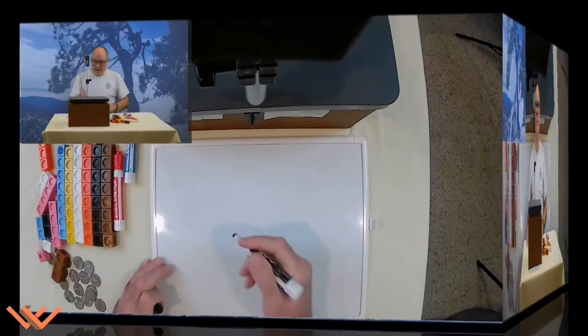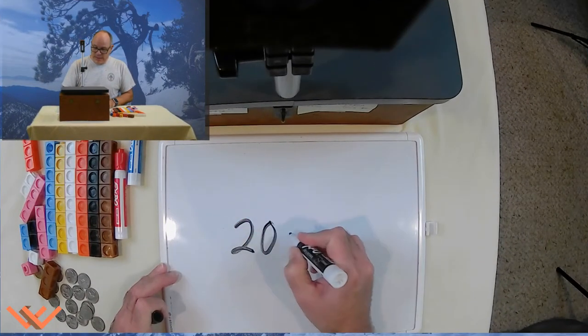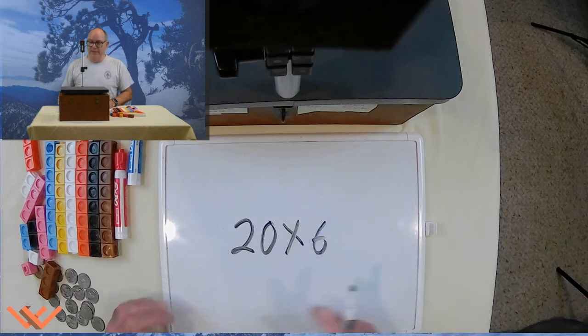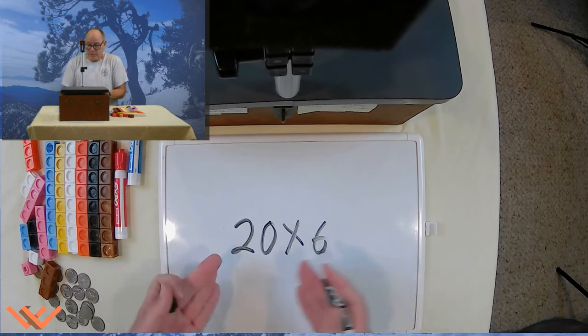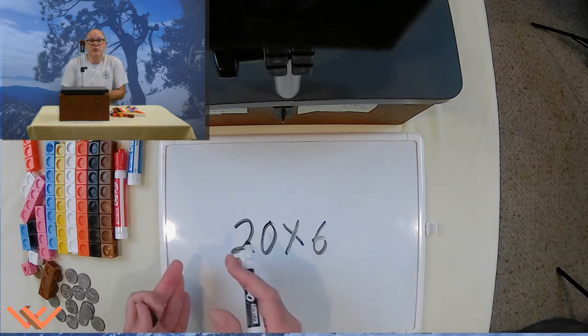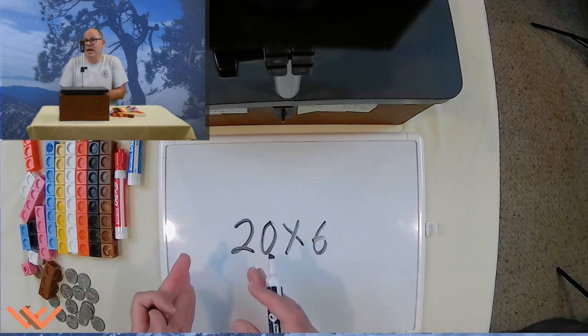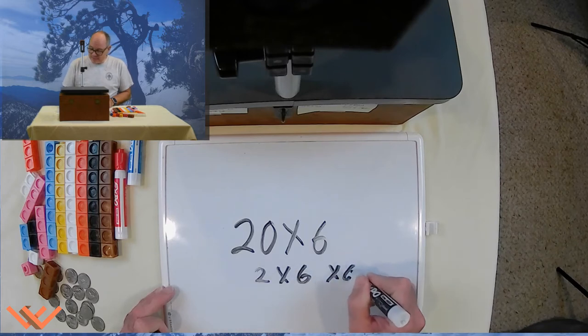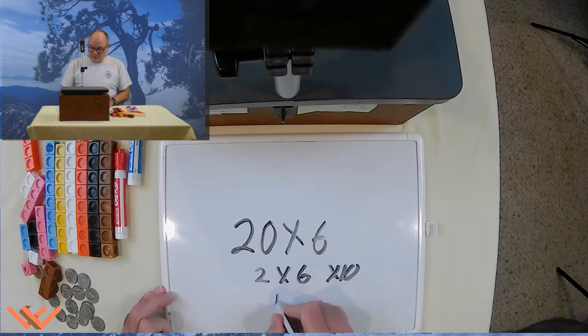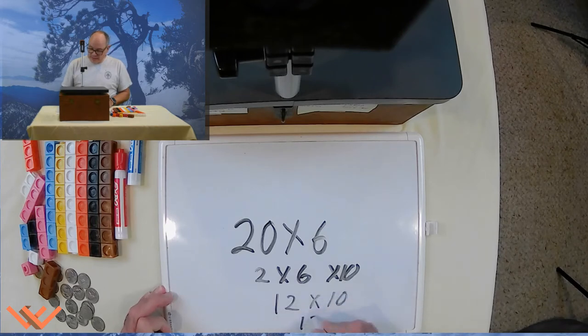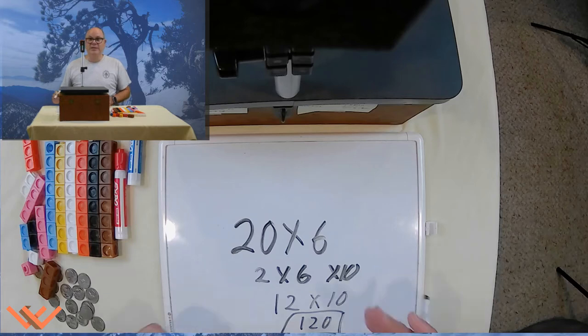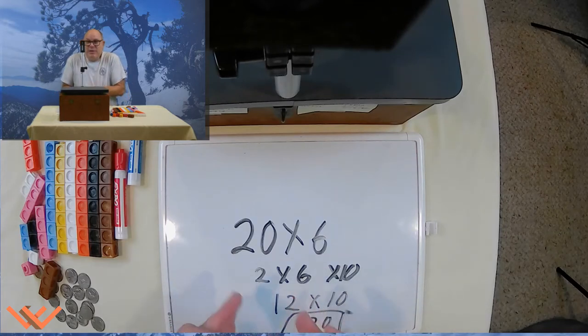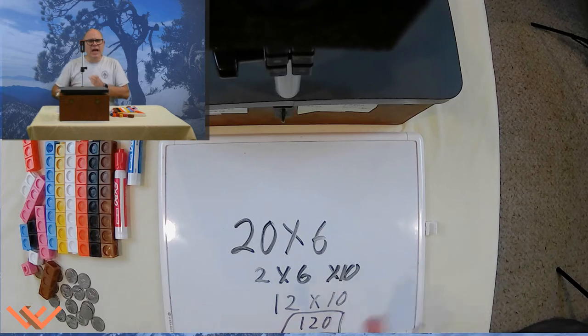So let's take a look. If we have a problem where it's 20 times 6, we have groups of 10 times 6. Well, we just say, what's 2 times 6? Well, it's actually 2 tens times 6. Let's take a look at it as 2 times 6 times 10. Well, 2 times 6 is 12 times 10 is 120. See, what we did is we just took that number and put a 0 at the end. That's a lot of the things that we do with multiplying by groups of 10.